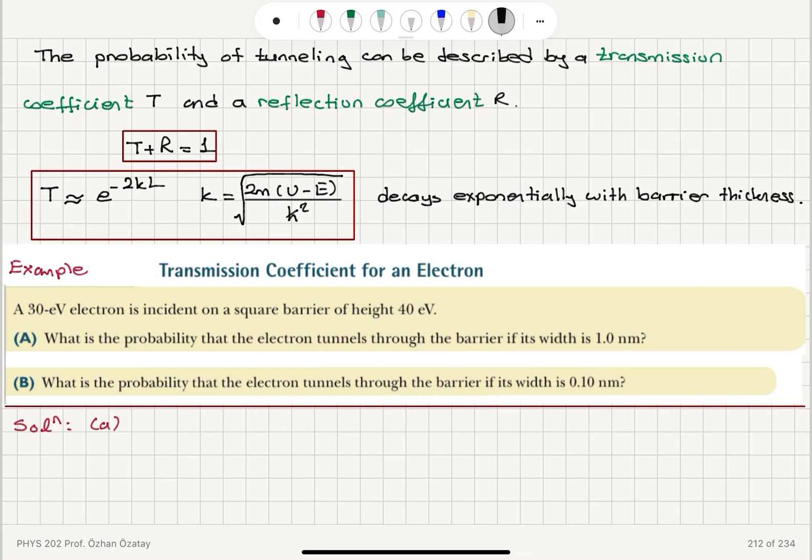For part A, let me calculate the wave vector magnitude k. That is square root of 2m(U-E) divided by h-bar.